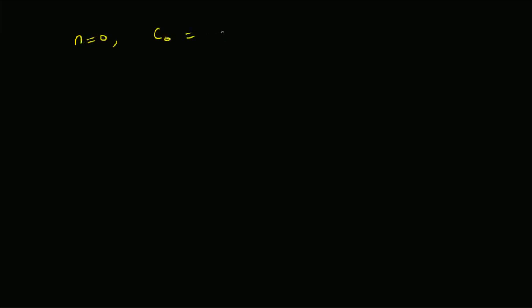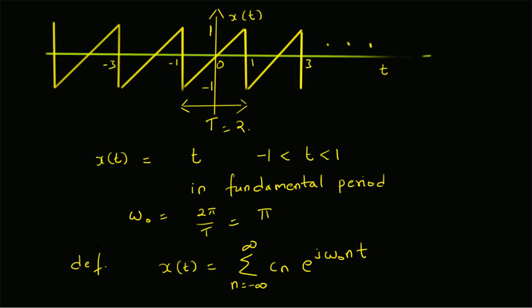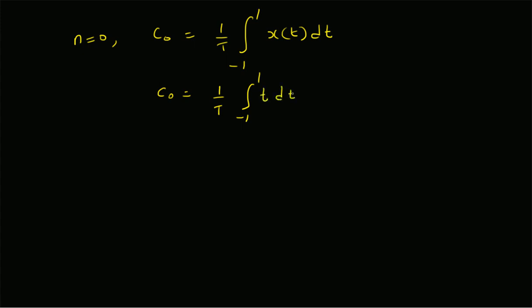For n equal to 0, c₀ — the basic constant — is 1 by T times the integral from minus 1 to plus 1 of x of t dt. So c₀ is equal to 1 by T times the integral from minus 1 to plus 1 of t dt. This integral is obviously equal to 0 because the integral of t dt is t² by 2, and t² by 2 is equal to 1 for both t=1 and t=−1, so the difference is 0.